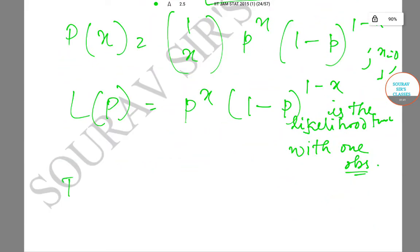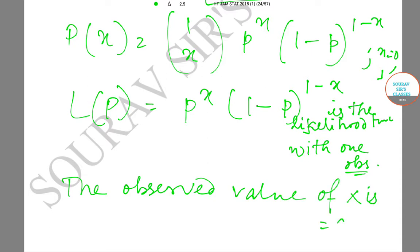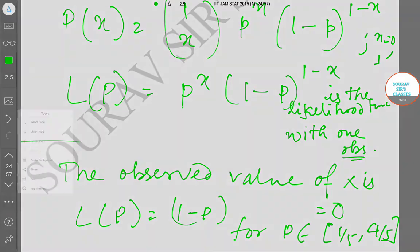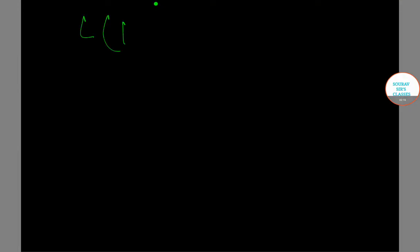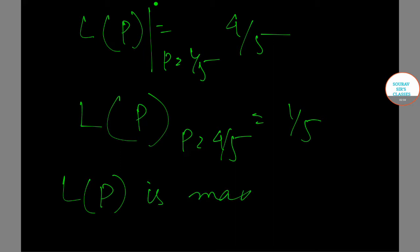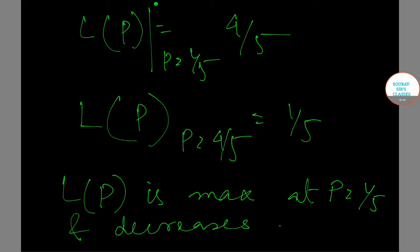Since the observed value of X is 0, L(p) equals (1 minus p), for p belonging to {1/5, 4/5}. Evaluating: L(p) at p = 1/5 equals 4/5, and L(p) at p = 4/5 equals 1/5. So L(p) is maximum at p = 1/5 and decreases as p increases.